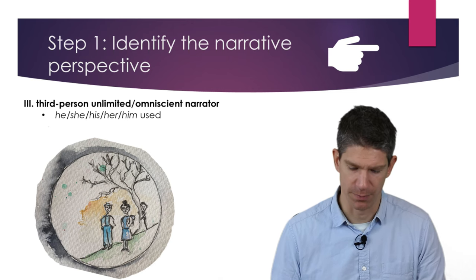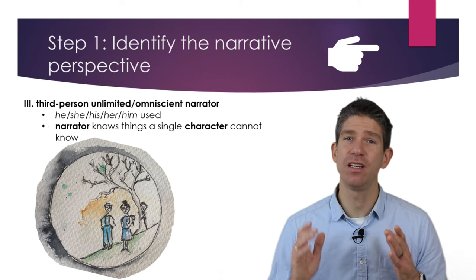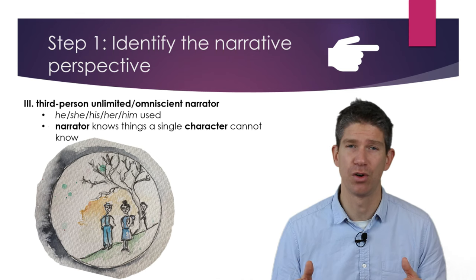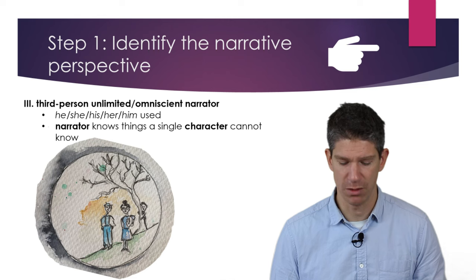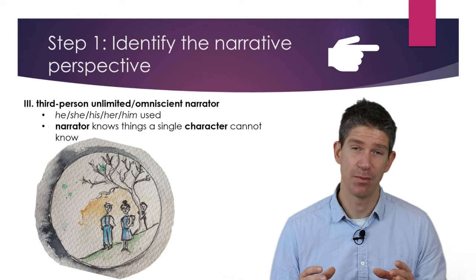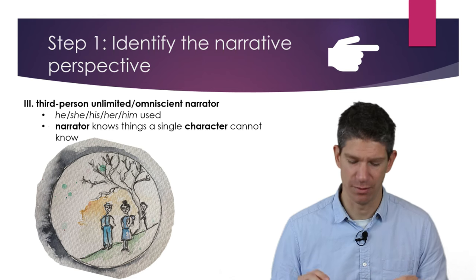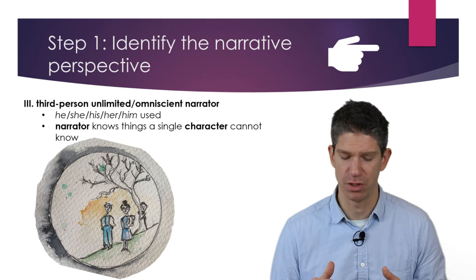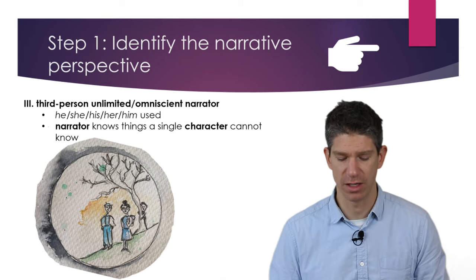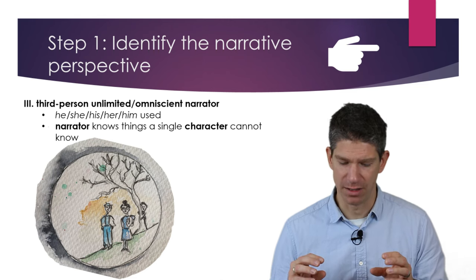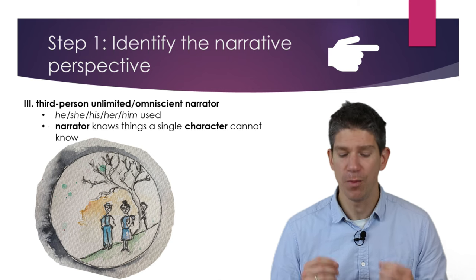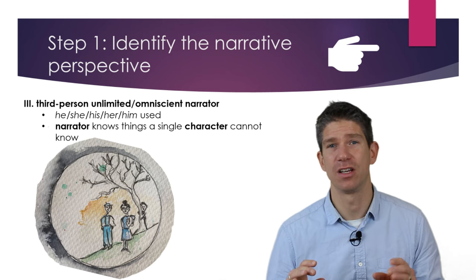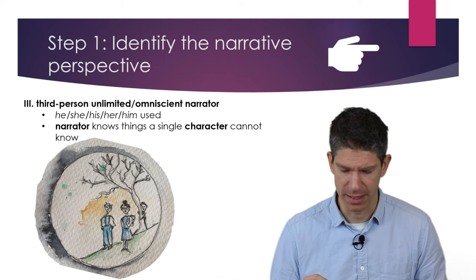The third person unlimited or omniscient narrator also uses third person pronouns, but now this narrator knows a lot more than any single character could know — what's going to happen, what has happened before, or things none of the characters know about. The camera analogy here is a bird's eye view: the narrator could know, for example, that there's a person standing behind a tree that the other character doesn't see. This narrator can also zoom in on individual characters to reveal their thoughts. It's a very flexible kind of narrator, not limited to one character.